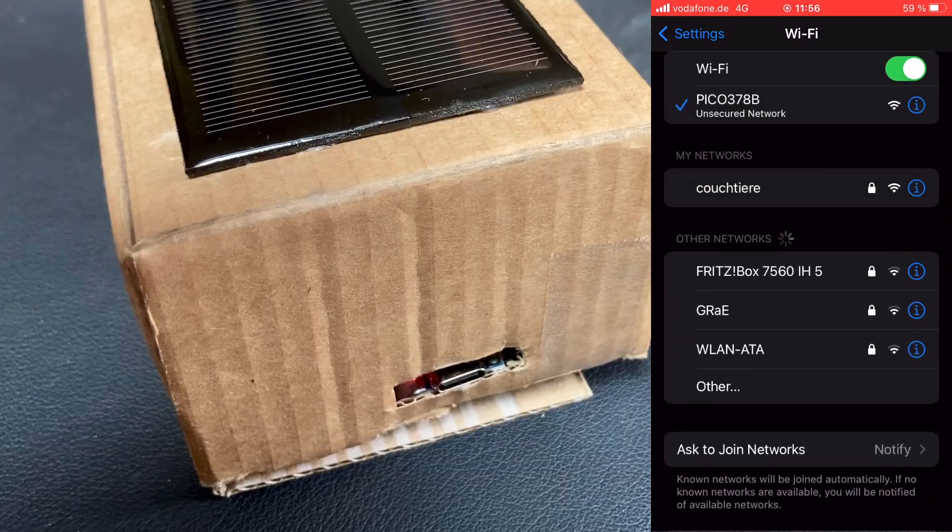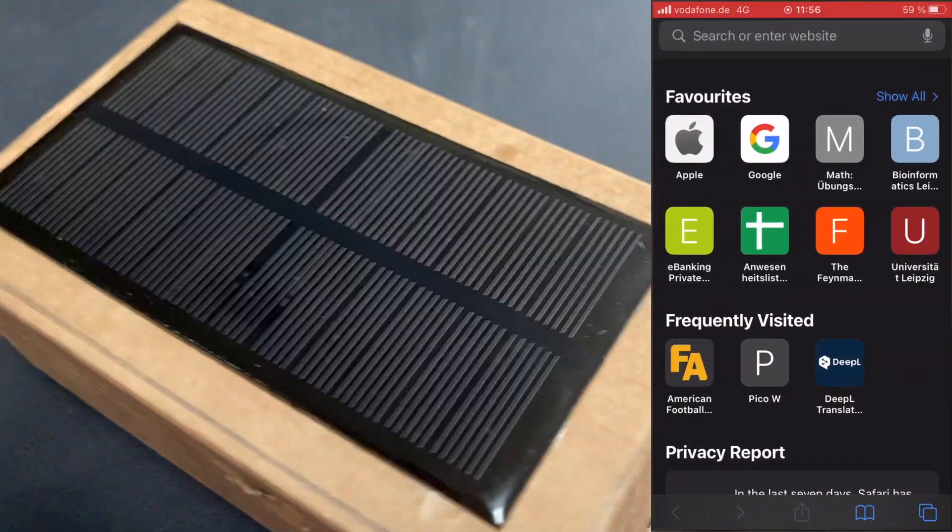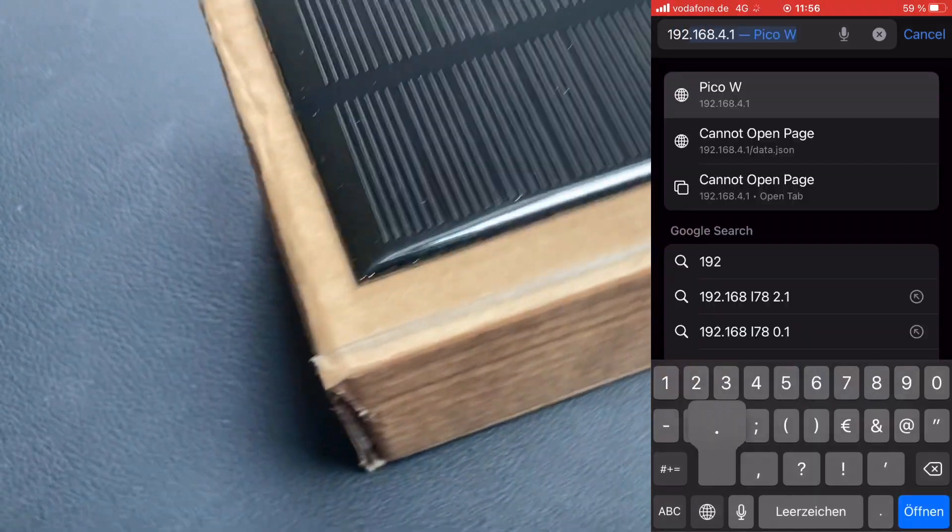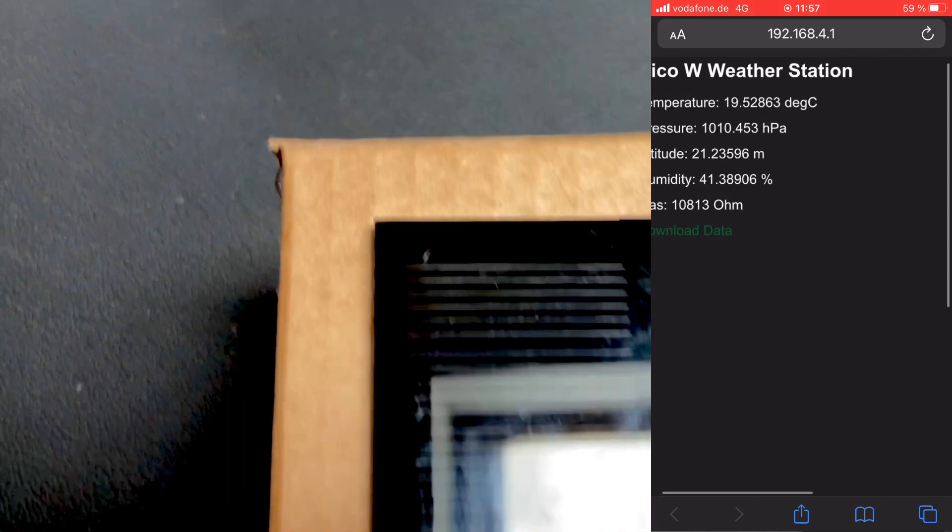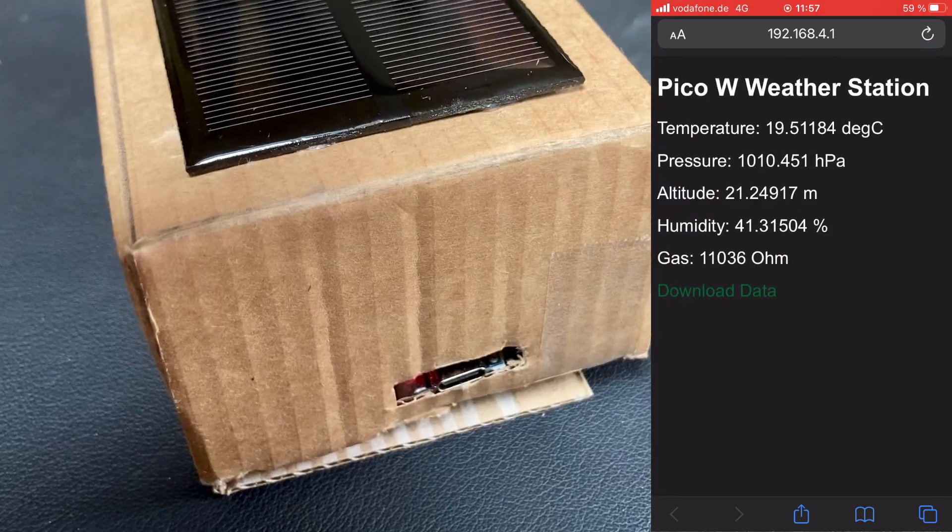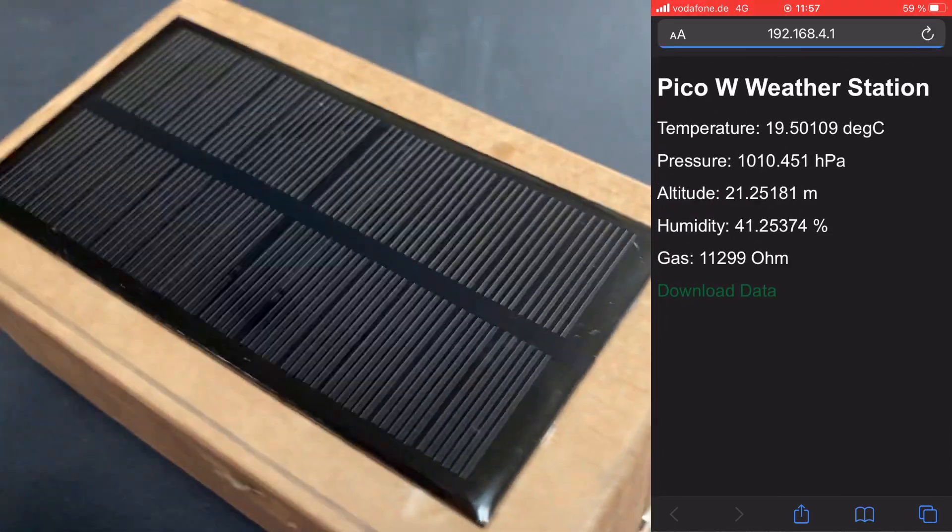Then in the Wi-Fi settings of your device, you should be able to connect to a wireless network that contains Pico in the name. For some reason, the SSID and password settings are not working yet, but this will likely be fixed in a future MicroPython version for the Pico W.